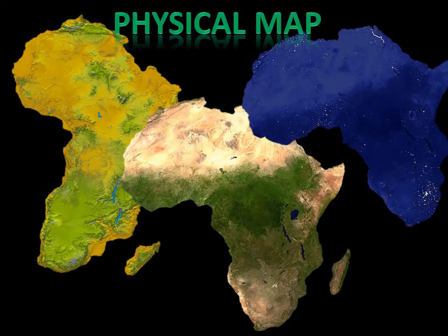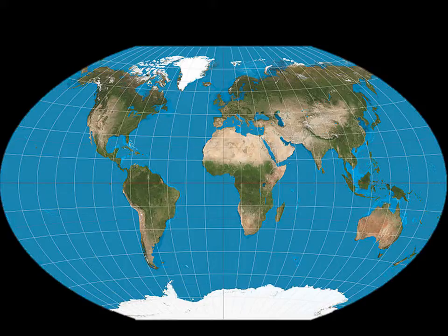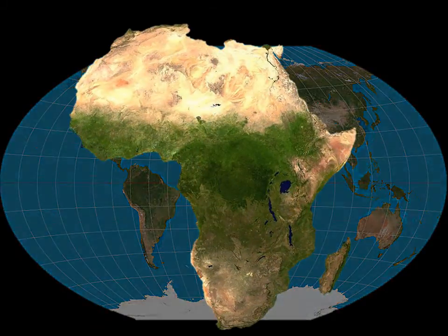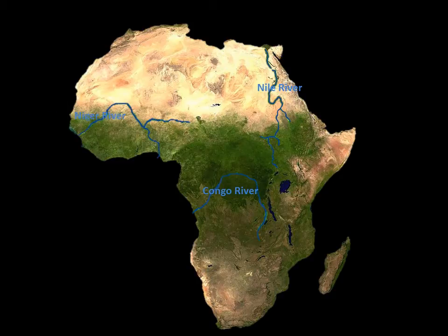Now we have the physical map of Africa. First up is the Nile River. The Nile River runs through Egypt, Sudan, South Sudan, and other countries. Next, we have the Congo River. The Congo River runs mainly through the Democratic Republic of the Congo. Now we have the Niger River. The Niger River runs through Nigeria and other countries.